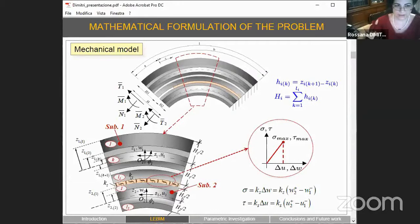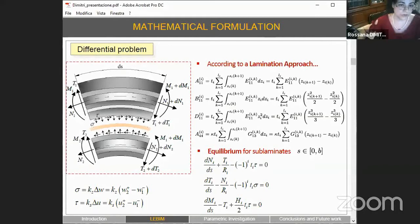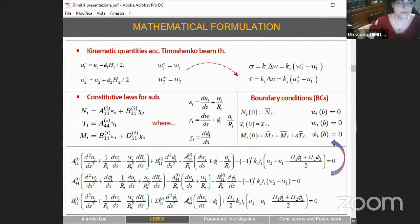According to a classical lamination approach, the sublaminates can be modeled as homogeneous equivalent beams where we have to introduce equivalent stiffness. We have to define the equilibrium equations for each sublaminate at least in the adhesive portion, then define and introduce the constitutive laws for each arm together with the boundary conditions.